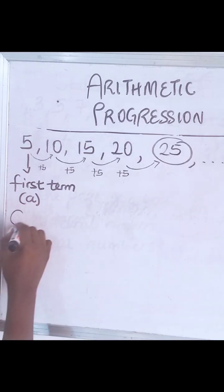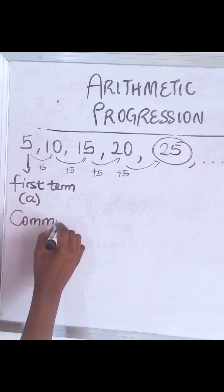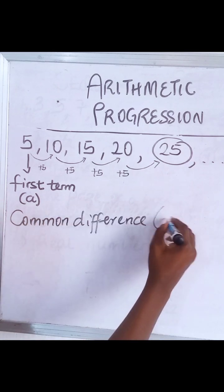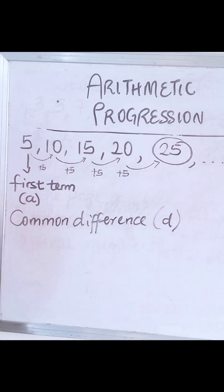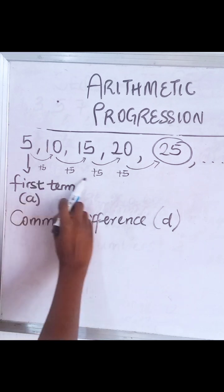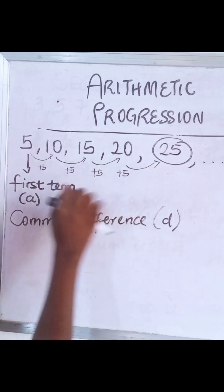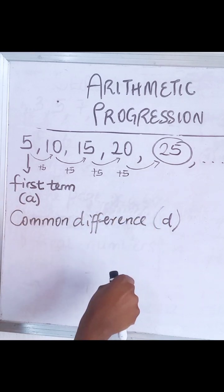So now we have something called the common difference, and it's represented with the letter D. What do we mean by the common difference? We see that five is common, meaning there's a pattern it followed. That's your common difference.